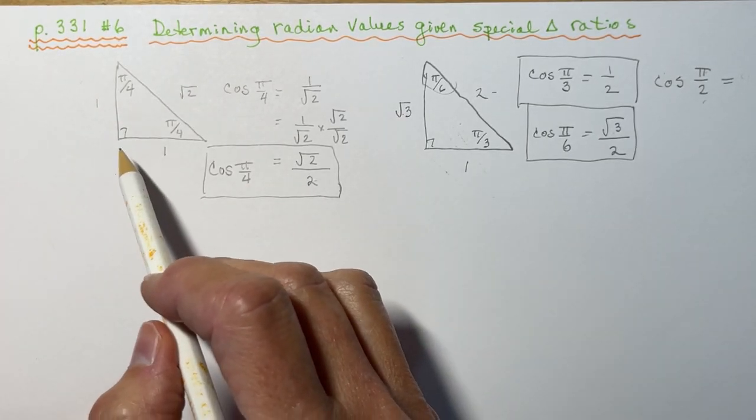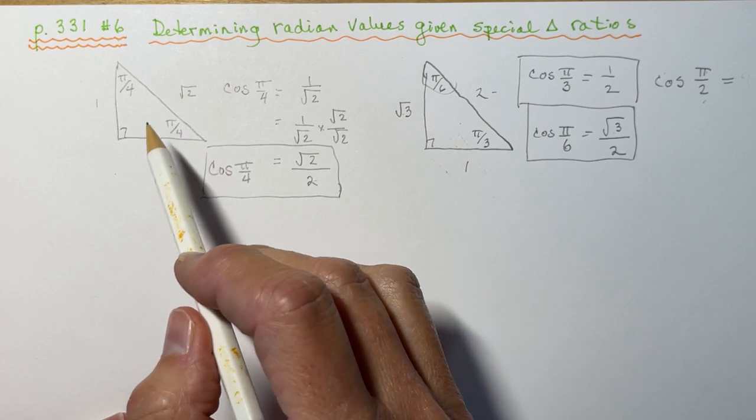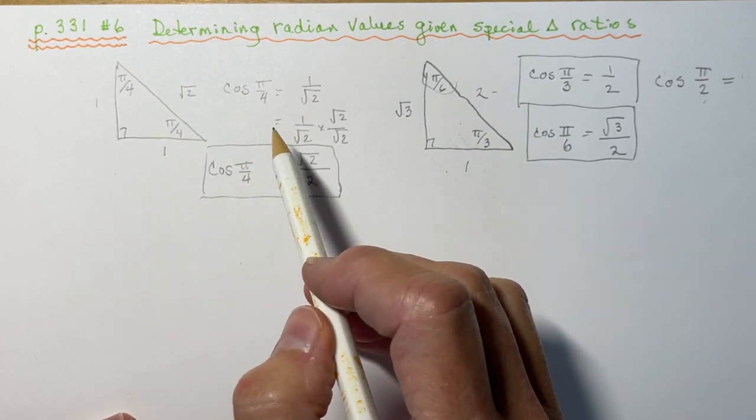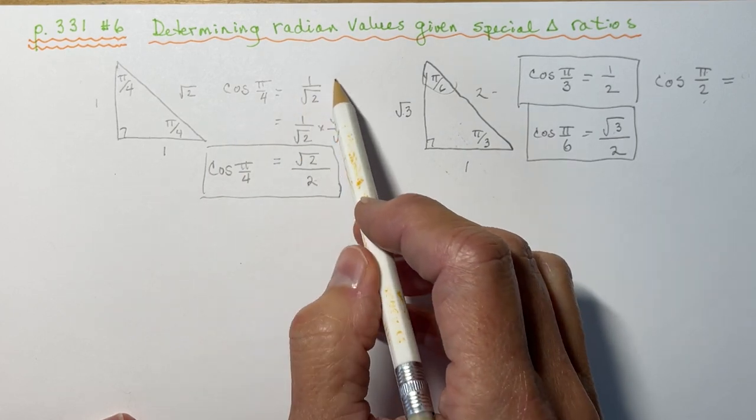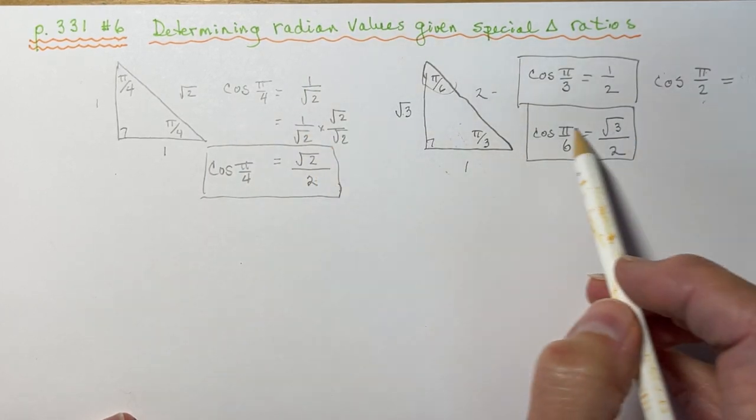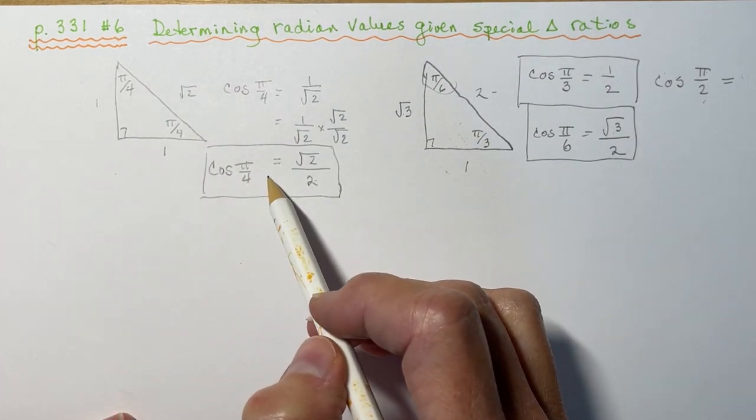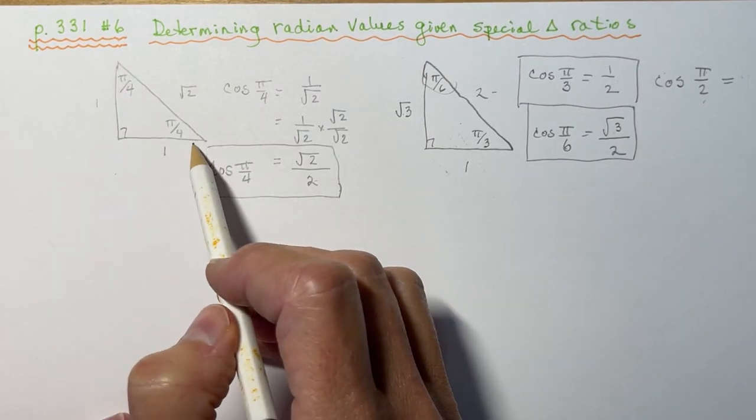The first thing you should recognize in the question is that all of those answers, A, B, C, D, E, F, they all have ratios like these. And these ratios, if you recall, come from your special triangles. So you should remember your special triangles.